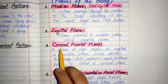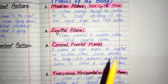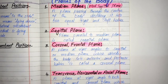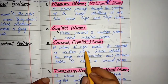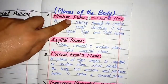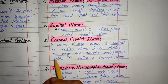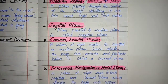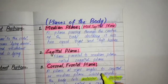The third plane we have is the coronal plane, which is also called the frontal plane. The second and third names of each plane are very important to memorize. The coronal or frontal plane is a plane at right angles to the sagittal or median plane — meaning it makes a 90-degree angle with the median or sagittal plane — and it divides the body into anterior and posterior parts.